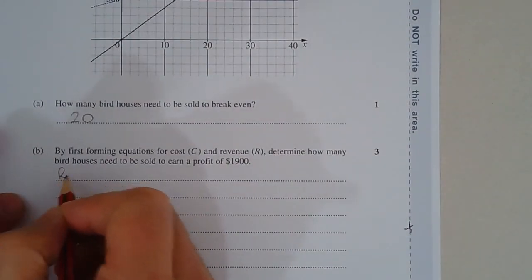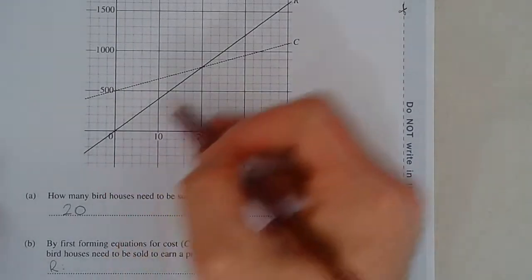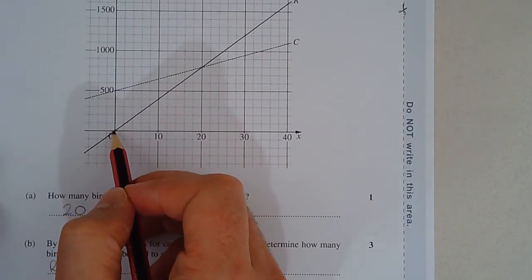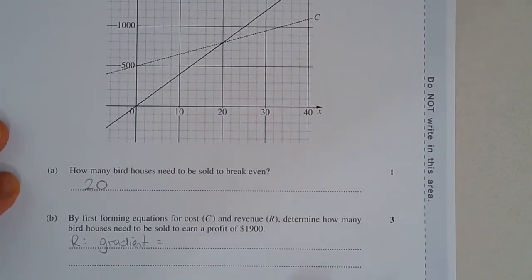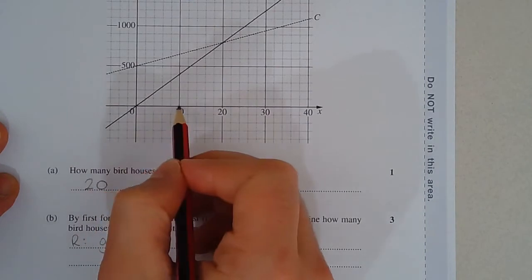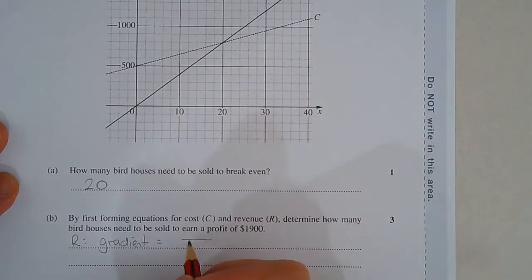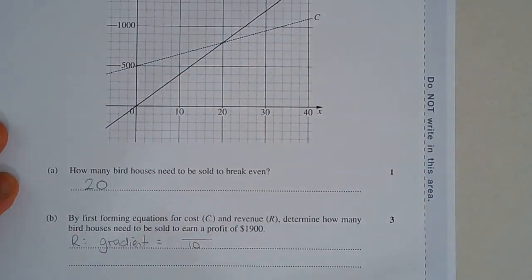So let's work out the revenue first or the equation for revenue. So that's the solid line. The y-intercept is 0. So this is an example of direct variation. So it's just going to be in the form y equals mx. So the gradient is equal to rise over run. So we can just choose a convenient right angle triangle. So we might just choose this one here. The run is 10.